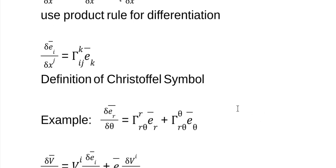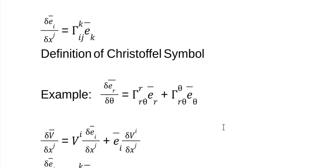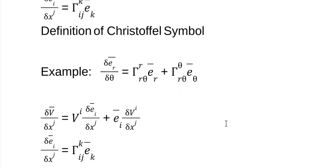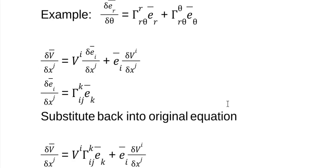So let's get back on track. Here is how we defined our derivative of this vector with respect to a coordinate. And we said this was the Christoffel symbol, the definition. So we're going to put this right back in here. We substitute that in and we get this.